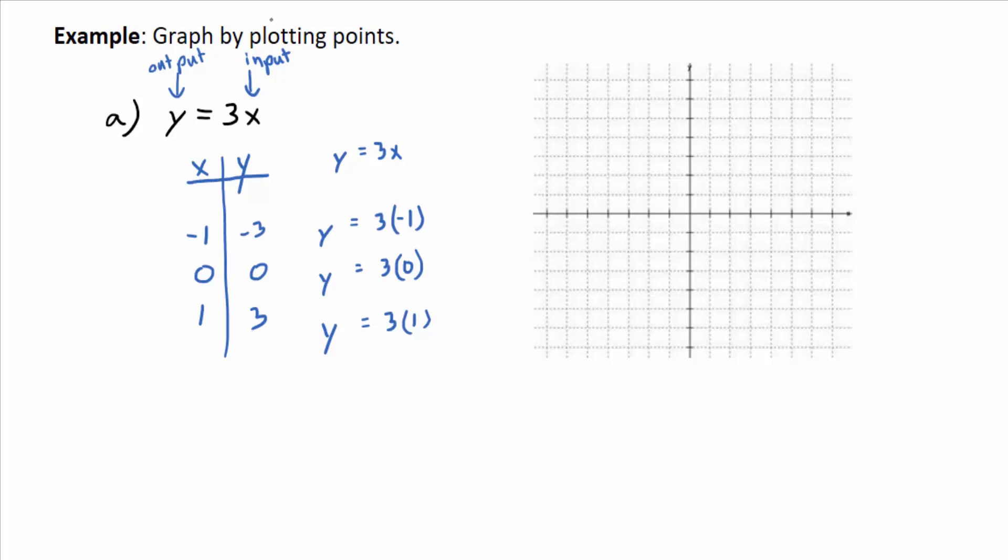So negative 1, negative 3, like that. Left 1, down 3. 0, 0, that's the origin. Over 1 up. I'm going to get my ruler tool out here. What does the arrow on the ends of the line mean? It keeps going forever, right? There's an infinite number of solutions. So that's a depiction of it.